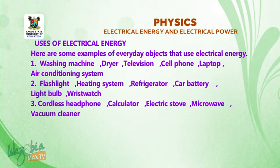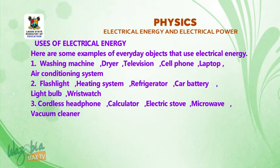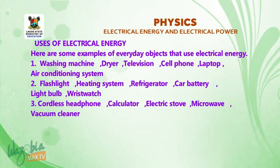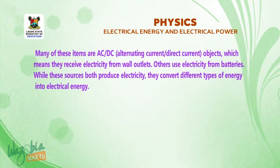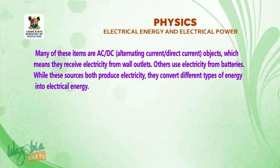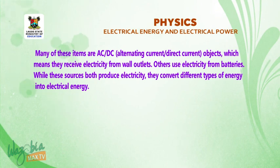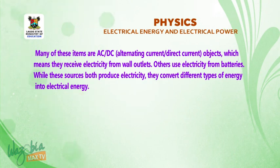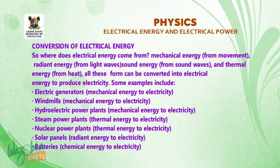Uses of electrical energy: here are some everyday objects that use electrical energy — washing machine, dryer, computer, television, cell phone, laptop, air conditioner, flashlight, heating system, regulator, battery, etc. Many of these items are AC or DC. AC means alternating current and DC means direct current. They receive electricity from wall outlets or from batteries, and both sources convert different types of energy into electrical energy.